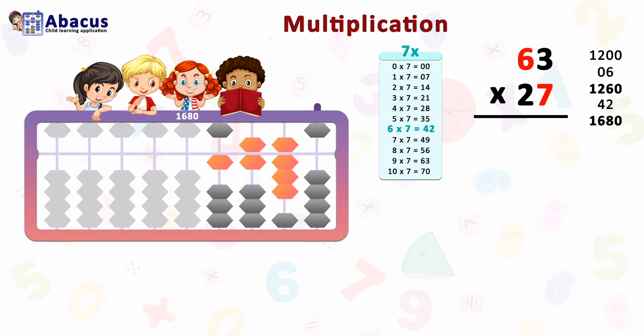The fourth step is 3 times 7 equals 21. Now only two numbers remain in the calculation — 3 and 7 — so only the tens and ones rods will be used.